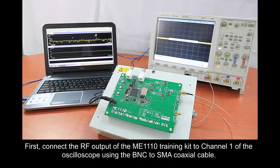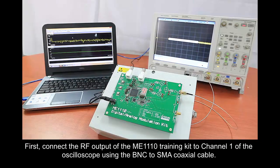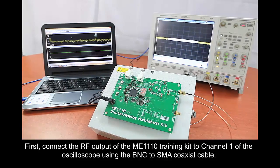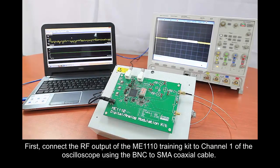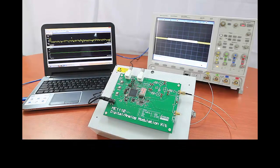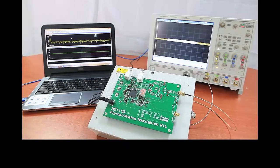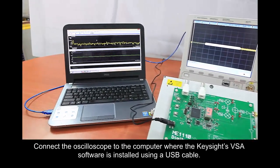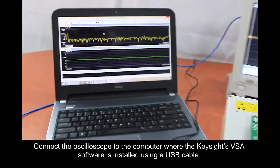First, connect the RF output of the ME1110 training kit to channel 1 of the oscilloscope using the BNC to SMA coaxial cable. Connect the oscilloscope to the computer where the Keysight's VSA software is installed using a USB cable.